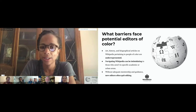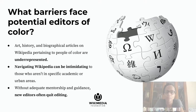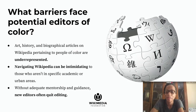What barriers face potential editors of color? Art history and biographical articles in Wikipedia pertaining to people of color are underrepresented. There's a huge lack of information about otherwise significant visual artists of the African diaspora on Wikipedia. Wikipedia is a great place for finding information, particularly for students starting important research for their projects, and not being able to find what you're looking for when you're looking for a Black artist on Wikipedia is difficult and problematic.